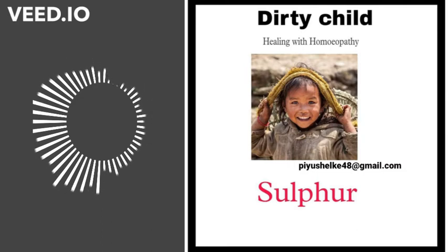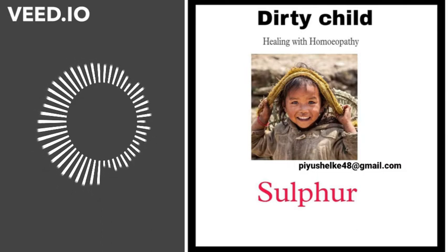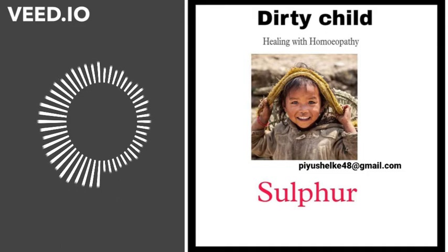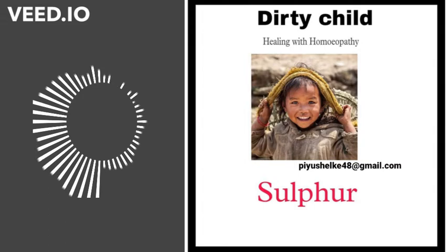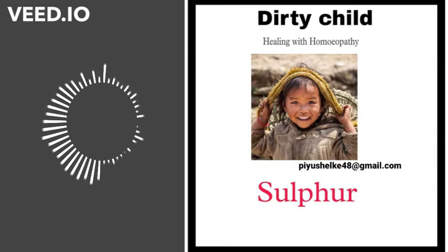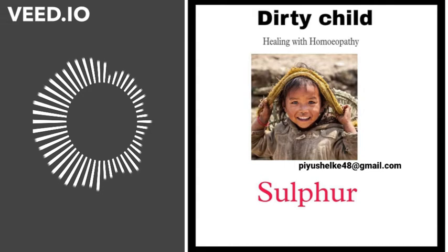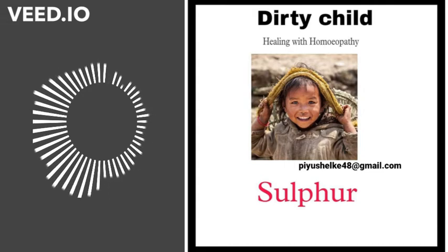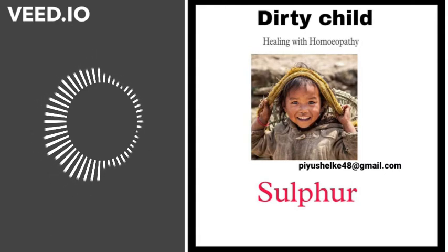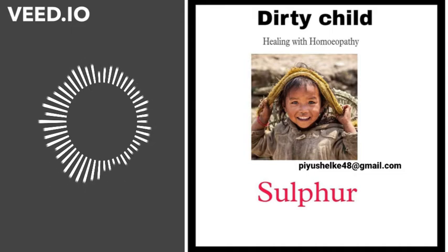Lips are red and so are all other orifices. There is emaciation of all parts of the body except the abdomen, which looks large and distended. The child has a good appetite but does not like to eat — he loses interest in food after eating a little. He gets sudden spells of hunger, especially at 11 AM. Another characteristic of sulfur is the hungry, empty feeling and burning in the stomach; he cannot wait for food.